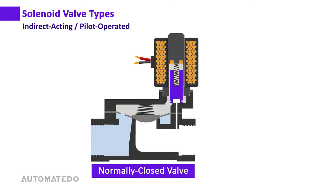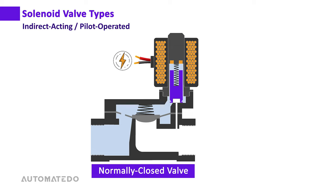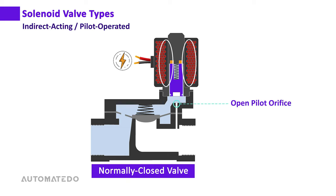The upper chamber is connected to the low pressure port by a small channel called a pilot orifice, which the plunger blocks in the closed position. When the solenoid energizes, the electromagnetic field pulls the plunger upwards, opening the pilot orifice. Pressure begins relieving from the upper chamber, making the upward force below the diaphragm stronger than the downward force above it.